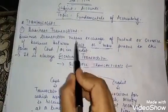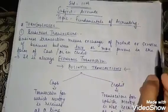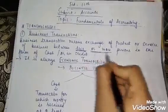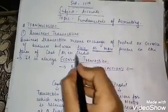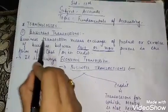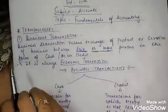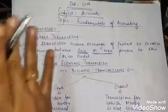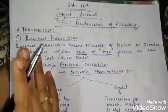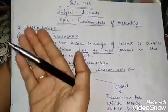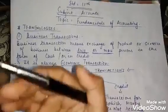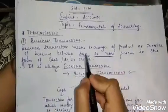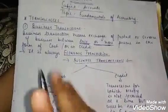Business transactions means the exchange of a product or service of a business between two or more persons, in the form of cash or credit. For example, now you are going to a purse shop. There will be a transaction — you give them money and they give you a purse. That is an exchange — a product exchange between two persons.